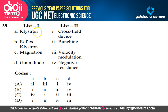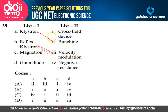Question 39: Klystron is known for bunching — very easy type of question. If you have ever heard of klystron, you would have heard it with bunching only. Reflex klystron goes with velocity modulation. Magnetron is a cross field device. Gun diode again uses negative resistance. So A matches to 2, B to 3, C to 1, D to 4 — which is option A. This is going to be the correct answer.